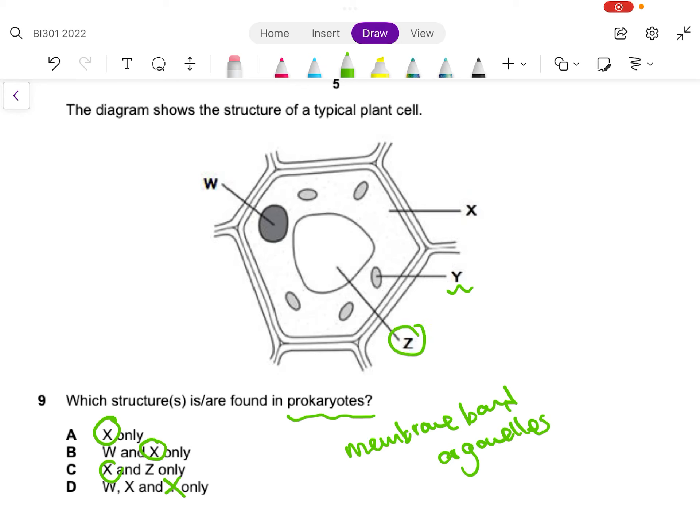Z is a vacuole. Vacuole is enclosed by a membrane, so anything with Z also cannot be the answer. W is the nucleus - nucleus comes with membrane, so anything with W also cannot be the answer. So the best answer is A. So prokaryotes will only share this similarity as cytoplasm.